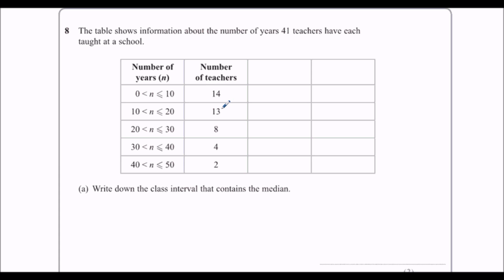And he is in this box. He's one of these, because there's 14 up to here, and then there's 27 at the end of this box. So the 21st one is in this box, so we write down the class interval, which is 10 to 20. Copy down what it says here.